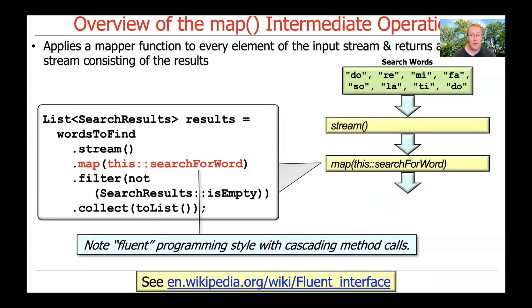Notice how we use this in a fluent programming style with these cascading method calls to intermediate and/or terminal operations. You can see here we take words to find, convert that into a stream of words to find, then we apply the searchForWord method by using map, and then later you can get rid of anything that's empty and then collect the results into a list. So it all flows together in a nice, fluent manner, and you're just basically building a pipeline to do these types of transformations.